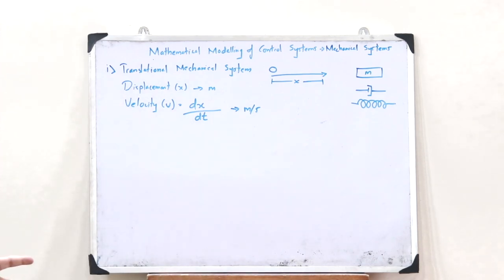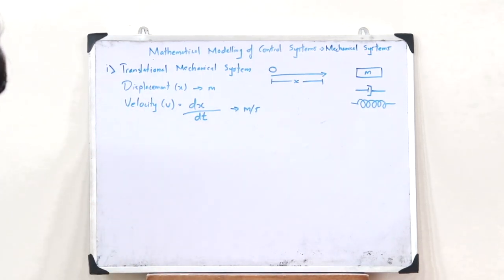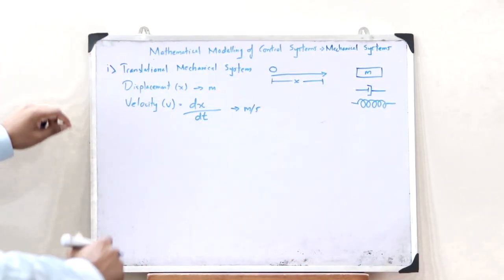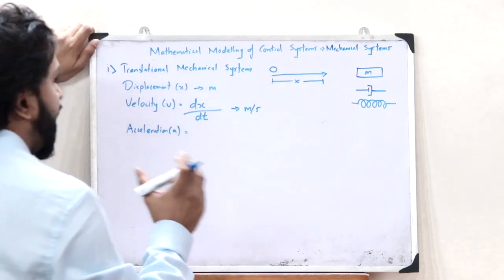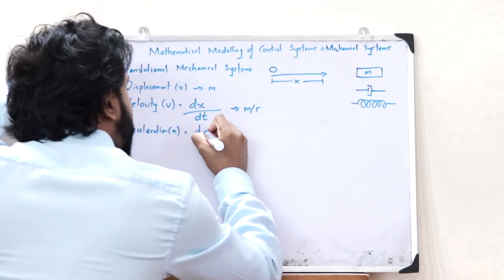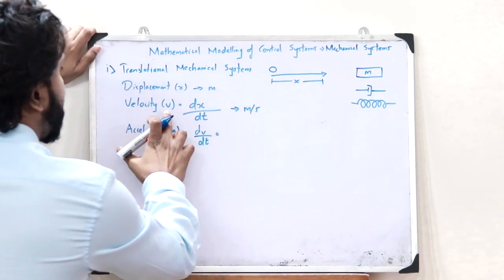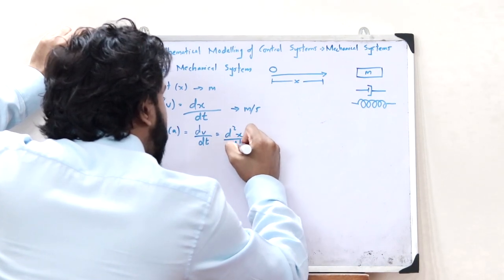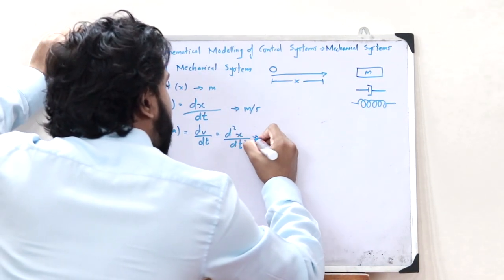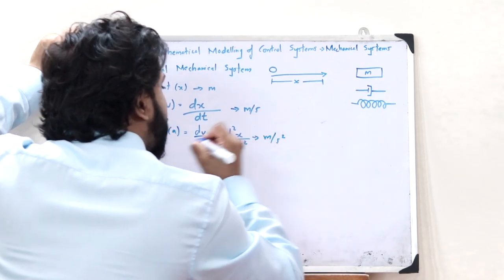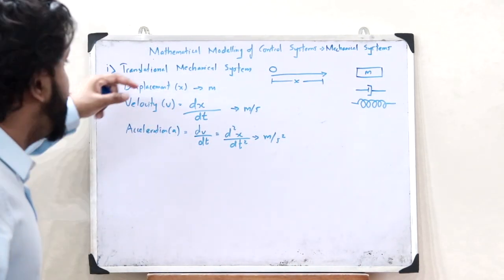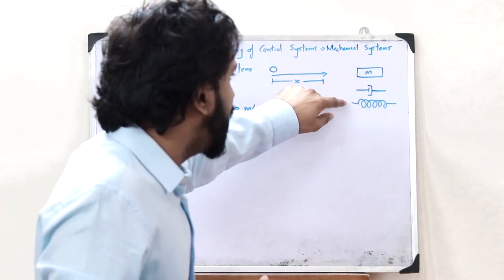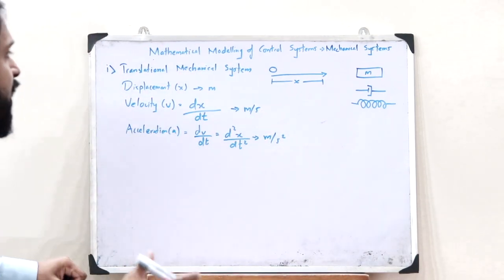The rate of change of velocity gives us the acceleration of that particular object. The acceleration is given as dv/dt, but since v is dx/dt, this becomes d²x/dt². The unit of acceleration is meters per second squared. With the help of these three — displacement, velocity, and acceleration — we can find the force acting on the three elemental components of a translational mechanical system.